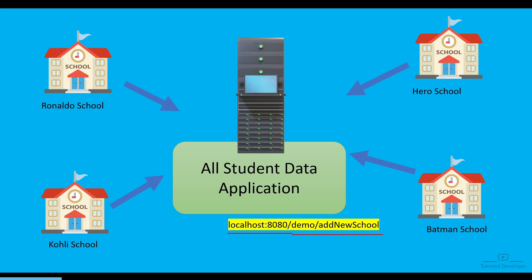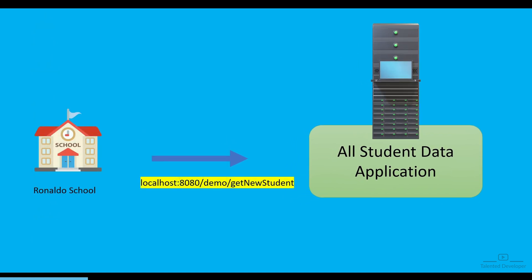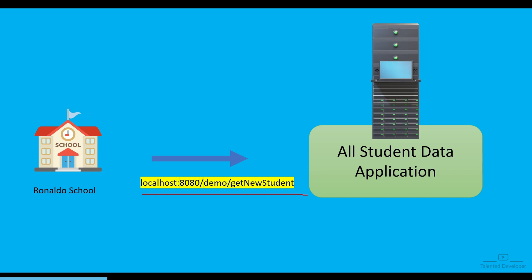Now imagine Ronaldo school is already signed up, and after that Ronaldo school students will try to sign up into the student data application. The student needs to call one API like localhost 8080 slash demo slash add student. Using this API, any student of Ronaldo school can easily sign up. After that, Ronaldo school needs to know how many new students have signed up. The student data application will provide an API like localhost 8080 slash demo slash get new student.